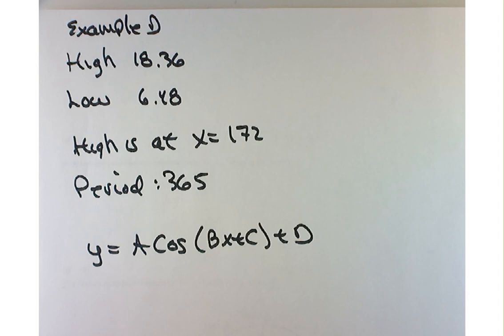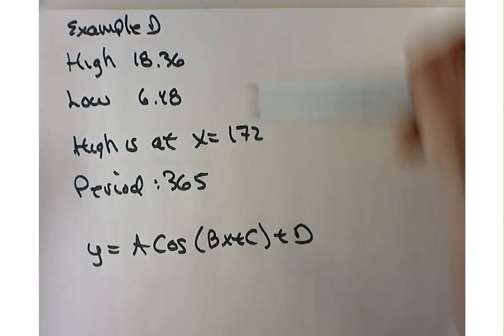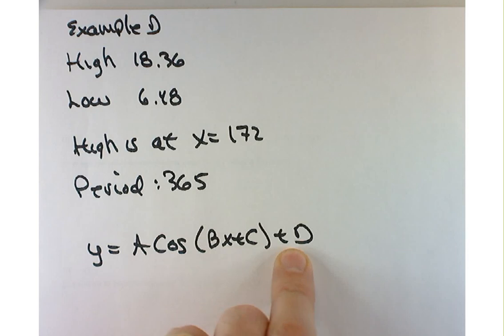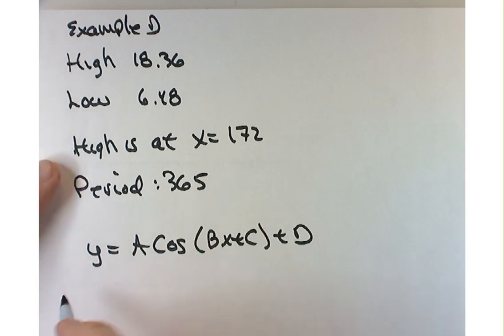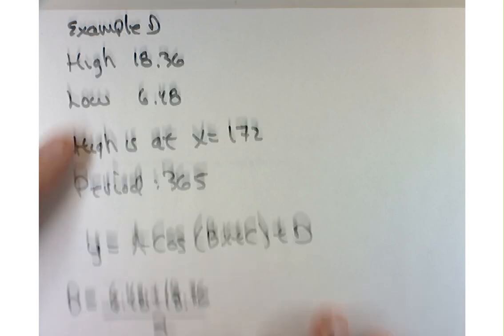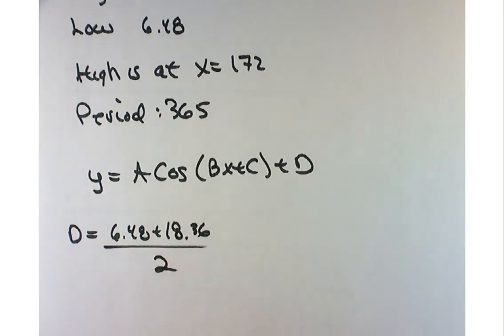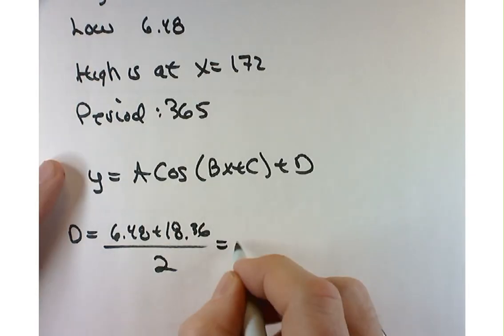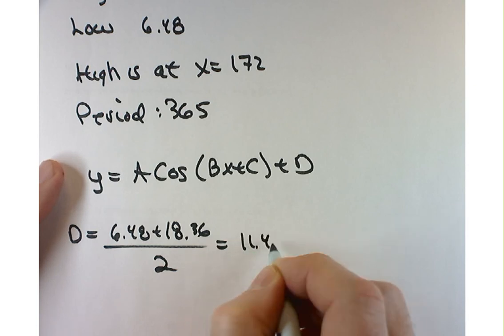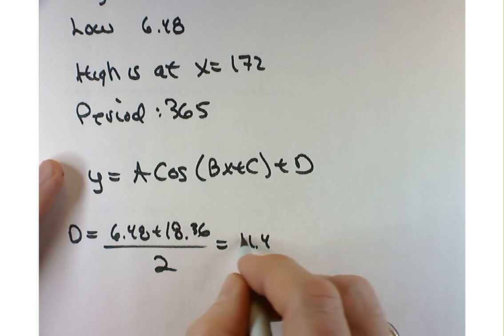First thing first, I need to figure out what d is. That's the low-hanging fruit. So d is going to be the average of the high and the low. That's going to be our middle value: 6.48 plus 18.36 divided by 2. Has anyone got that one for me? 12.42. Someone else confirm that? Yeah, 12.42.